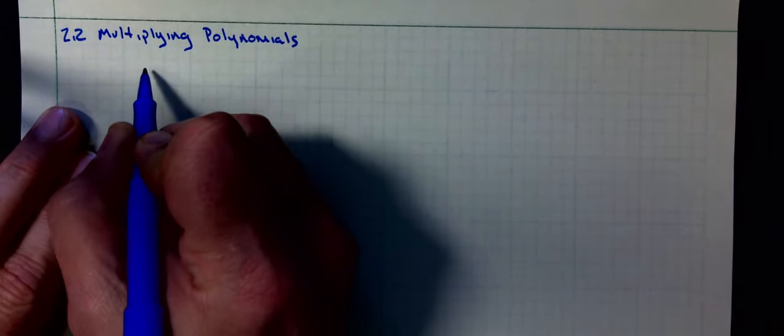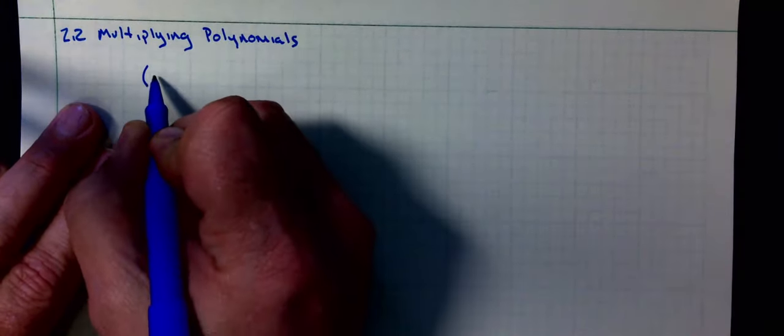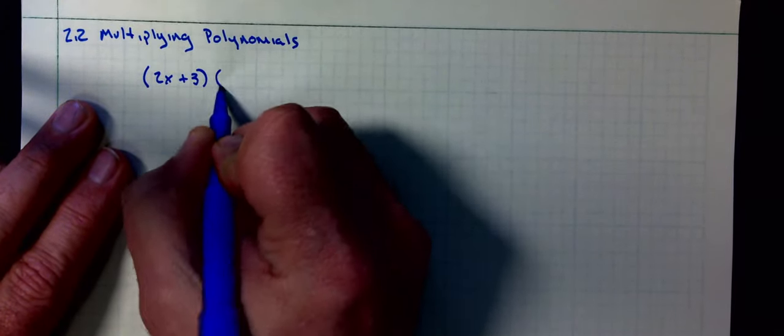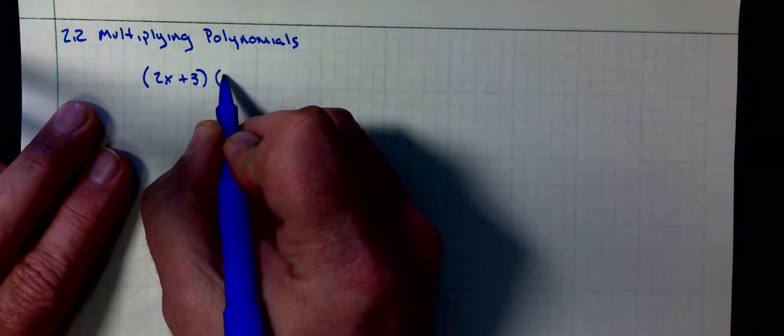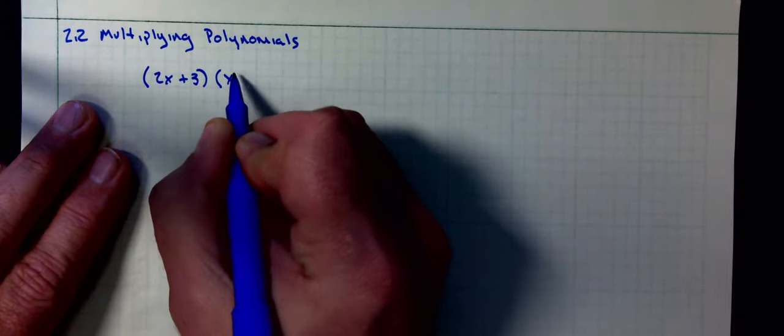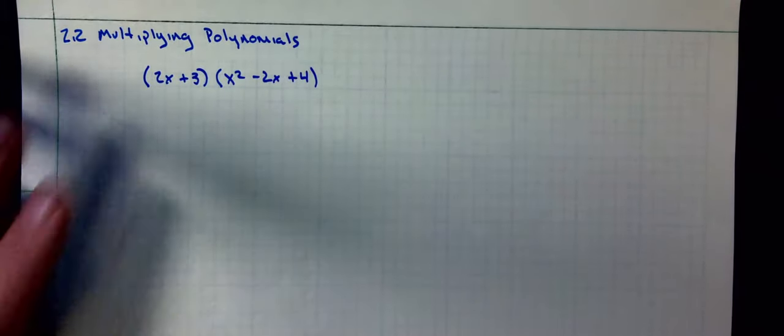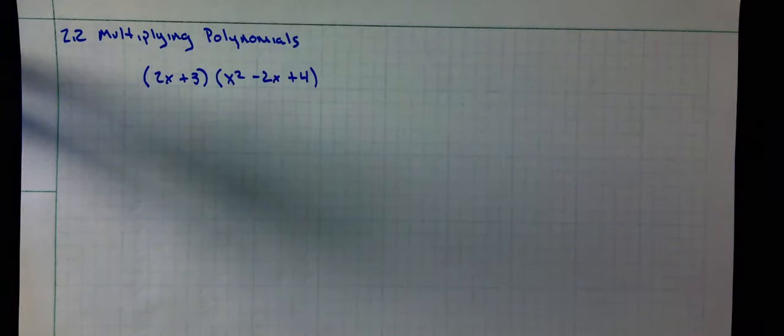So to multiply polynomials, binomial times trinomial. I'm going to show you three different methods to multiply this out. The first one is using distribution.